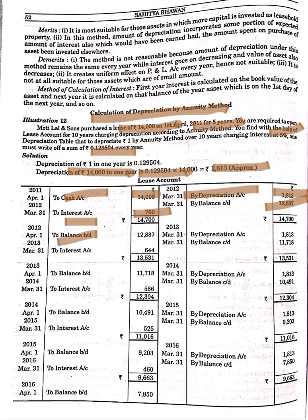Write down the balance brought down: 12,887. Interest is again charged on this amount at 5%, giving approximately Rs. 644. Depreciation is 1,813, leaving a balance of 11,718. Carry this balance forward. Again add interest of Rs. 586. Depreciation is 1,813, giving a balance of 10,491.